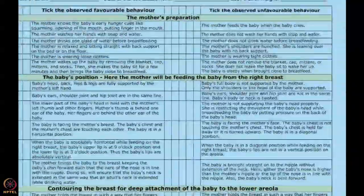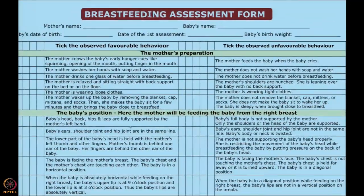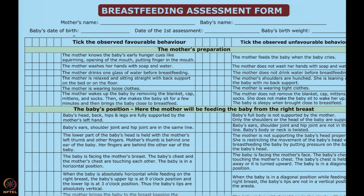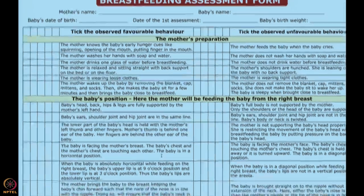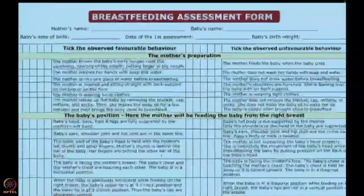This is the breastfeeding assessment chart. You have mother's name, baby's name, date of birth, first assessment, and baby's birth weight. You write down day zero or day one and the date, then start examining breastfeeding. Positive findings get a tick mark on the left, negative on the right. For example, mother's preparation: does mother know early hunger cues? If mother waits for the baby to cry, that tick mark goes on the unfavorable side. At the end you will be observing each point while you're breastfeeding the baby.